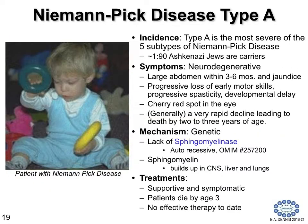Less common than Gaucher's disease or Tay-Sachs disease is Niemann-Pick disease, type A, which is still pretty prevalent. It results in neurodegenerative disease with many ramifications for the growing infant and death at a very early age. It results from a lack of sphingomyelinase, and therefore sphingomyelin builds up in the CNS, liver, and lungs, and patients die at a very early age.